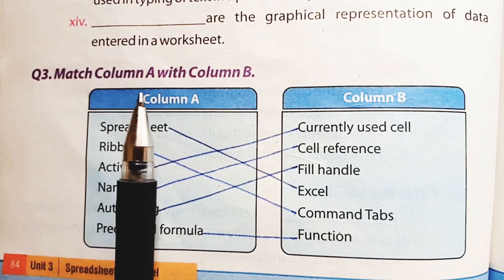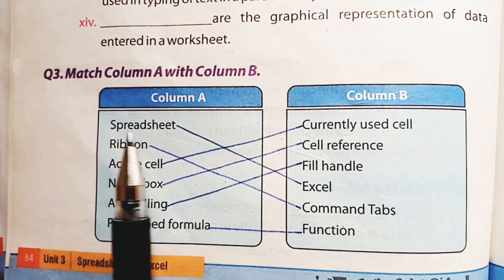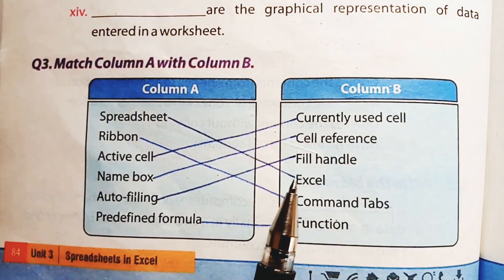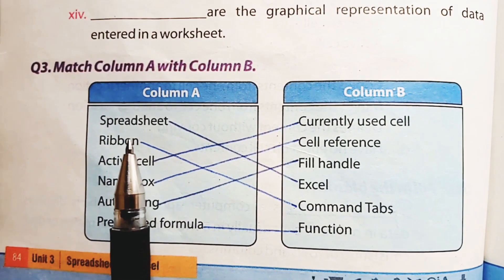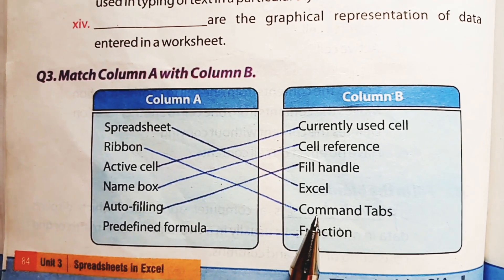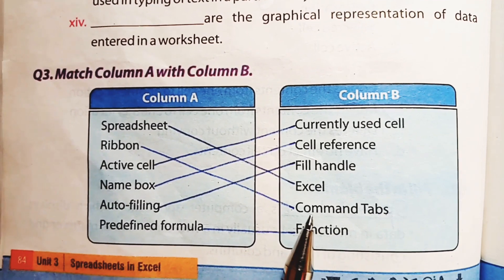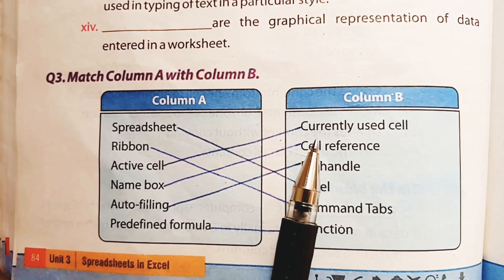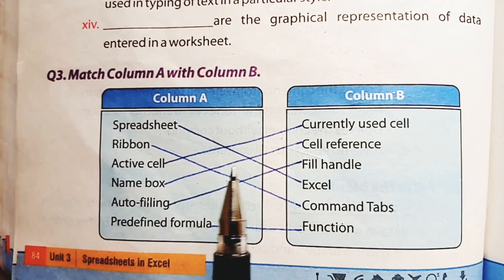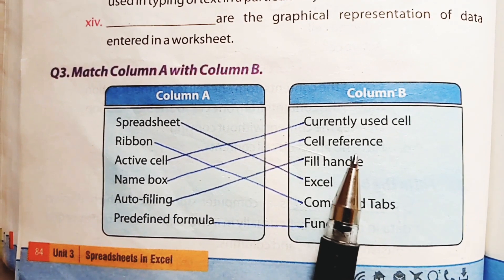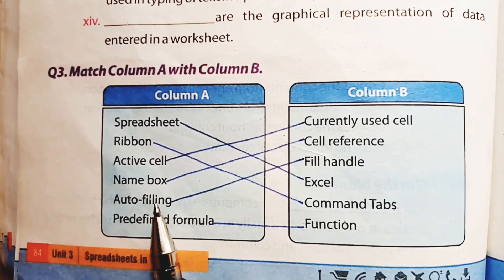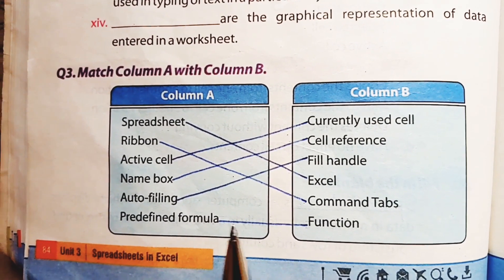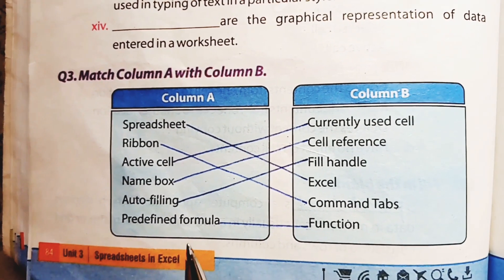Question number 3 is match column A with column B. In column A, spreadsheet can be matched with Excel, since we create spreadsheets in Excel. Ribbon is matched with its corresponding description. Predefined formula is basically a function in Excel, so it is matched with function.